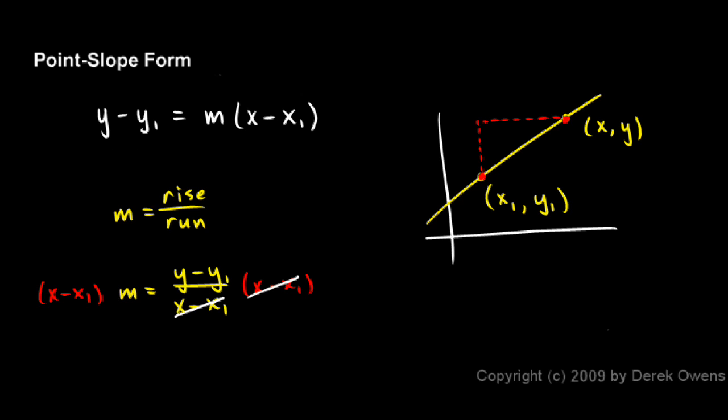So that equation just comes from our formula for the slope of a line, rise over run.